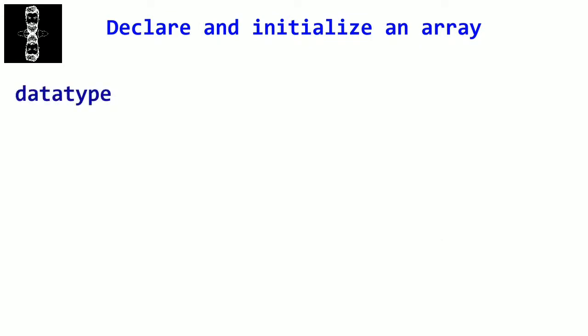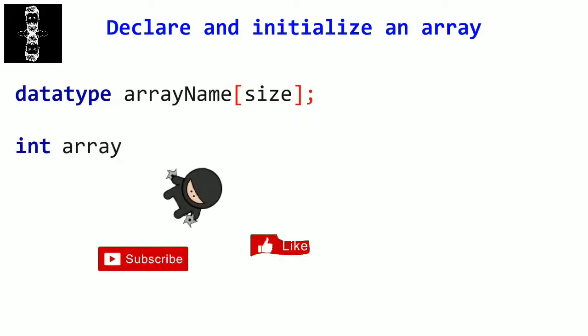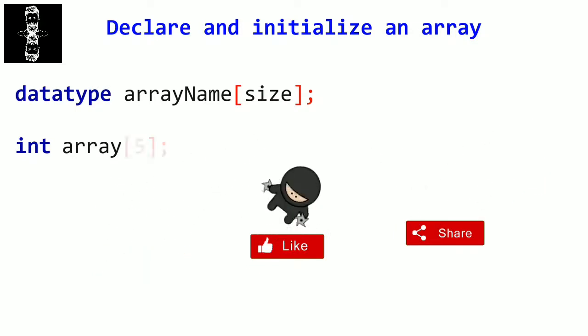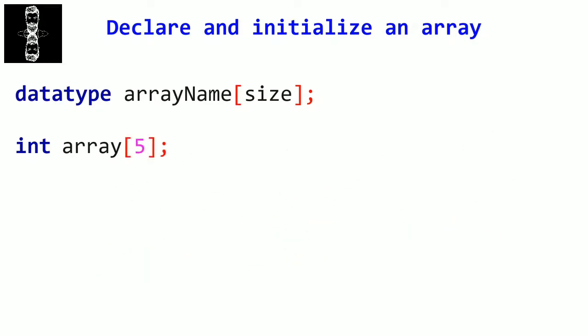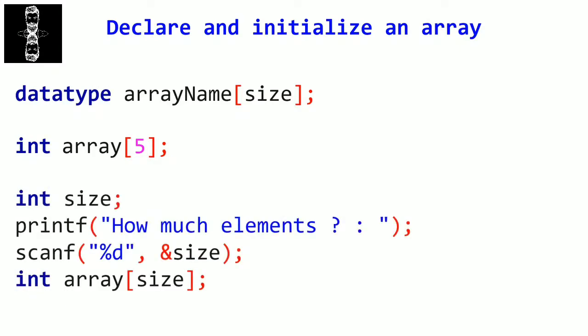Welcome to this video where we will learn how to declare and initialize an array. The syntax is very simple. First we have the data type that will be in the array — for example int or char. Then the name of the array, which follows the same naming rules as variables. Then just after it, between brackets, you put the number of elements. For example, to declare an array of 5 elements of type int, we write int, choose a name like array, then put 5 between brackets. In recent C language versions, you can also put a variable as the size of the array.